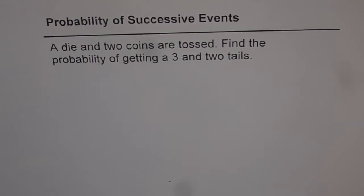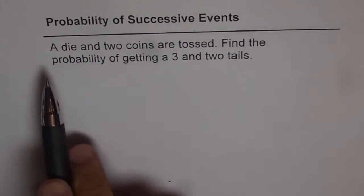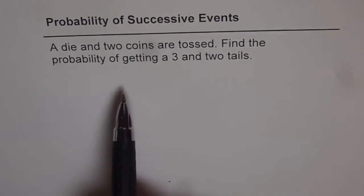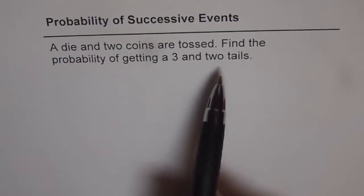Probability of successive events. A die and two coins are tossed. Find the probability of getting a 3 and two tails.